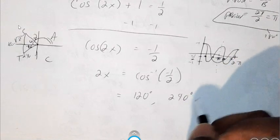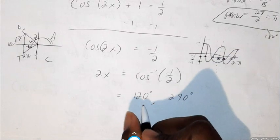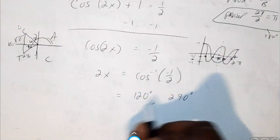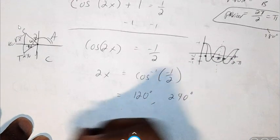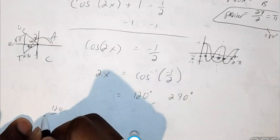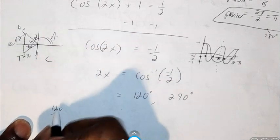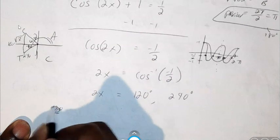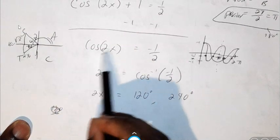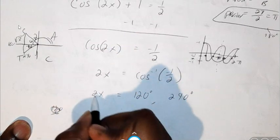The way we find out the answer is, we take the answer that we know and we add our period to it. So since our period is 180, I'm going to add 180 to 120. So 120 plus 180. Before we begin, let's first divide everything by two because we're not just finding the angle, we're finding X. So divide everything by two.